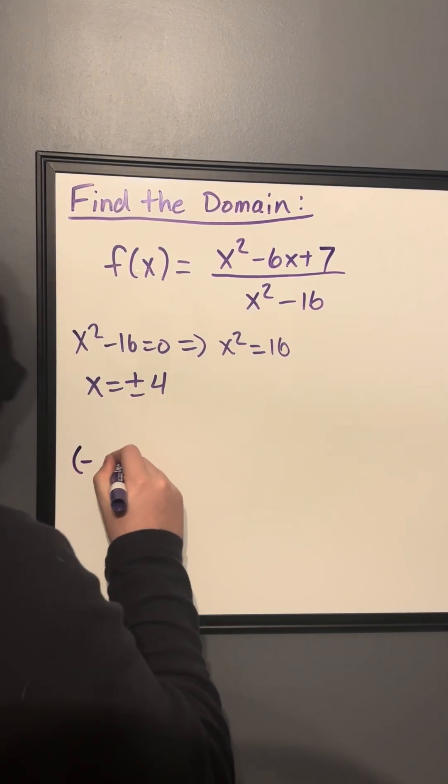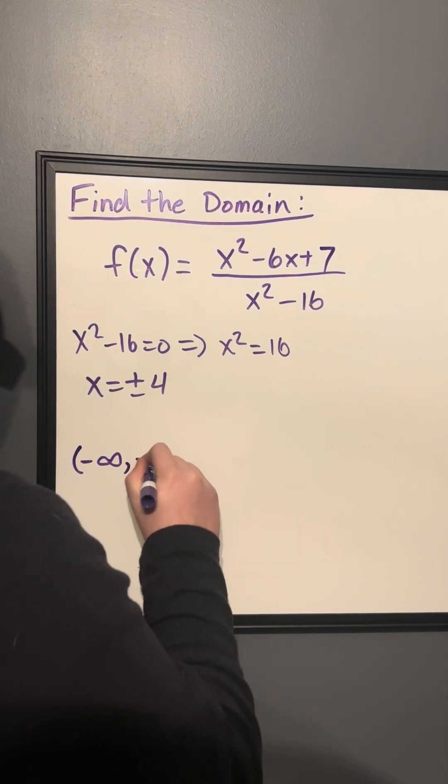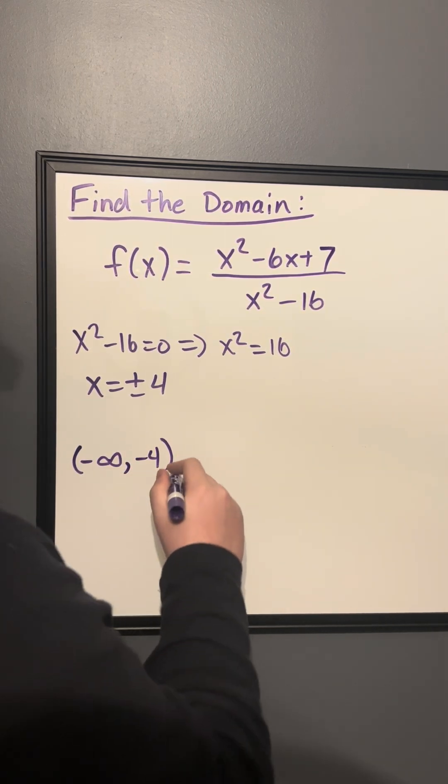So we're going to start off at negative infinity, and of course that needs a parenthesis, not a bracket. And it's going to go to negative 4, again with a parenthesis because it's never going to get there.